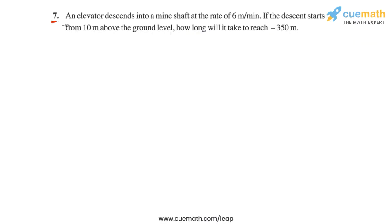Question 7 of this exercise says, an elevator descends into a mine shaft at the rate of 6 meters per minute. If the descent starts from 10 meters above the ground level, how long will it take to reach minus 350 meters?